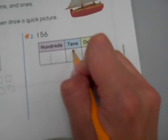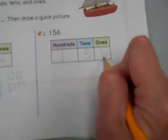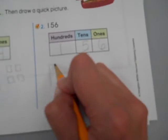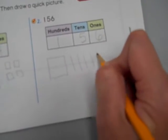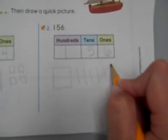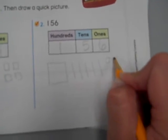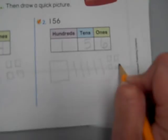Let's go to number 2. We have 156. Now, let's draw it. One hundred, 50, 10, 20, 30, 40, 50, and six ones. One, two, three, four, five, six.